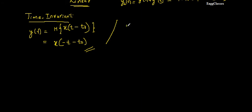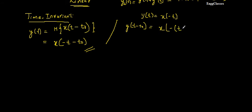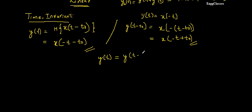For the second half, consider a shift in the output: y of t minus t-naught. Starting from y of t equals x of minus t, to get y of t minus t-naught I replace every t with t minus t-naught, giving x of minus (t minus t-naught), which simplifies to x of minus t plus t-naught. Comparing the two results, they are not equal. Therefore, the given system is time variant.